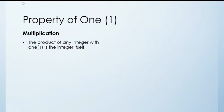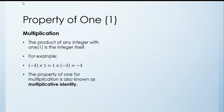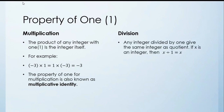Property of one — Multiplication. The product of any integer with 1 is the integer itself. For example, (−3) × 1 = 1 × (−3) = −3. This property is also known as multiplicative identity. For division: any integer divided by 1 gives the same integer as quotient. If x is an integer then x ÷ 1 = x. For example, (−7) ÷ 1 = −7.